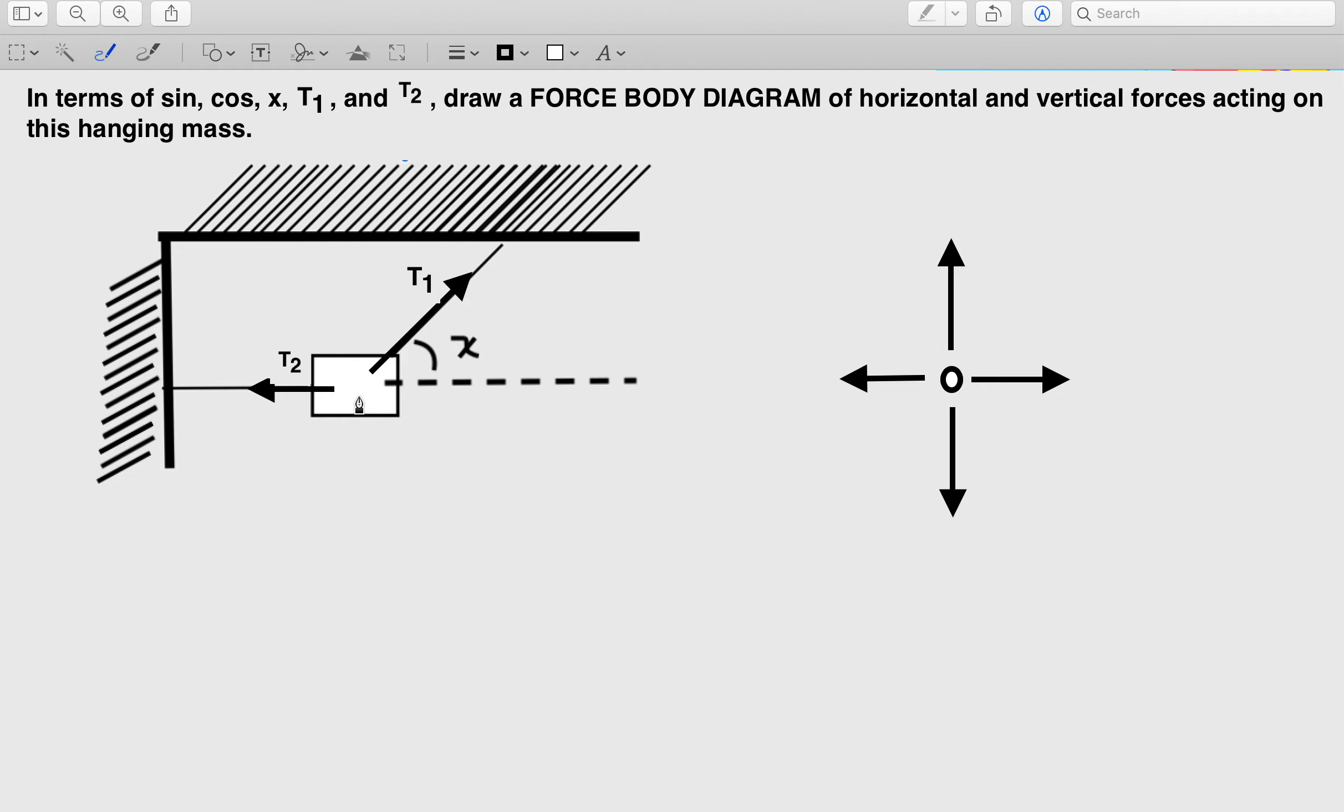So here we have a mass suspended from a ceiling by one string with tension T1 at an angle x from the horizontal, and then we have this horizontal string also attaching it to the wall next to it. In terms of sine, cosine, x, T1, and T2, draw a force body diagram of horizontal and vertical forces acting on this hanging mass.